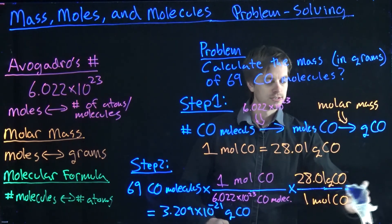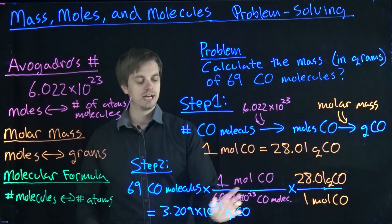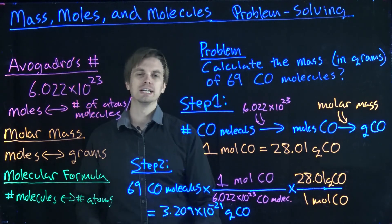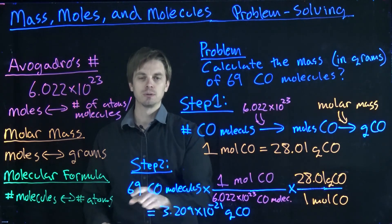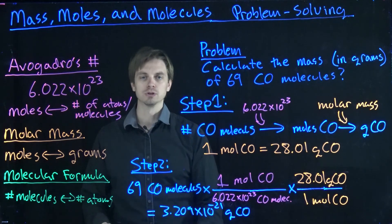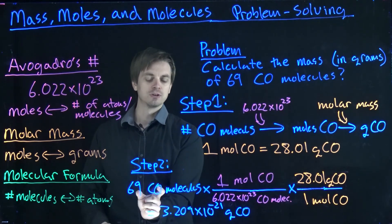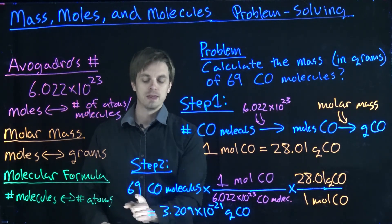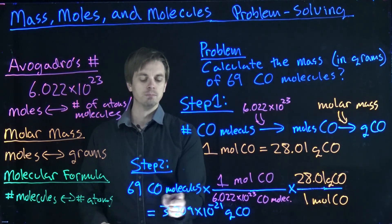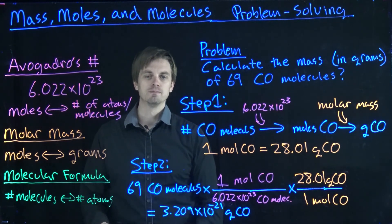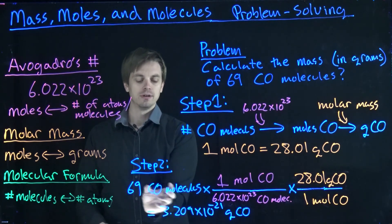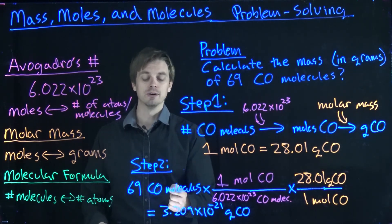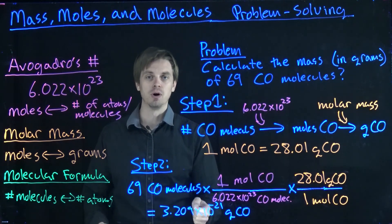So, quick note on this. I want you to ask yourself, why is it that I'm reporting four significant figures in my final answer if my initial number only had two numbers here? Pause the video for a second. I want you to think about that. The reason being is because when we're counting out molecules here, this is actually an exact quantity. So, if I'm giving you discrete objects here, in this case molecules of CO, and I'm telling you there are 69 of them, that means there are exactly 69 of these molecules.